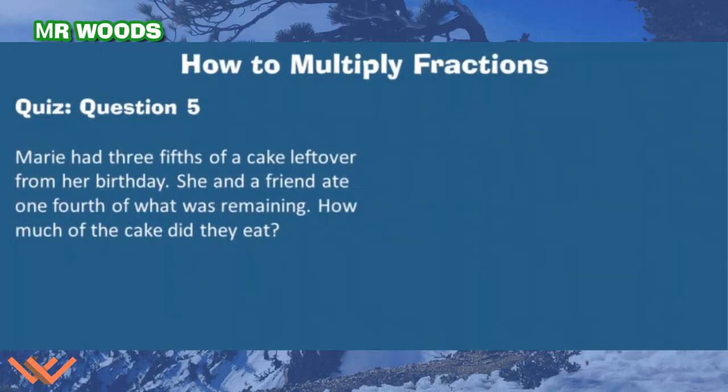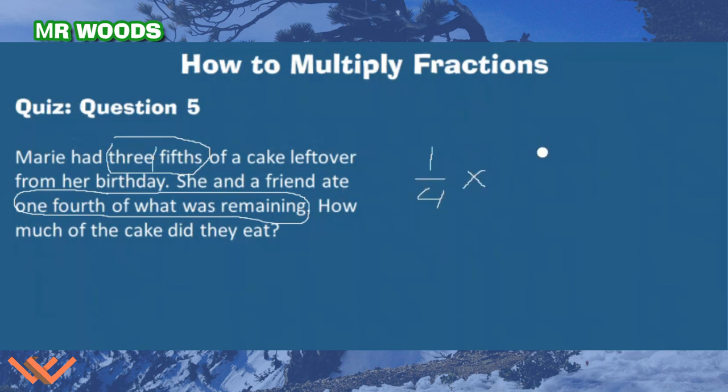Question number five. Marie had three fifths of a cake left over from her birthday. She and a friend ate one fourth of what was remaining. How much of the cake did they eat? We have to look at the important information. So I have three fifths of a cake. And she and a friend, they ate one fourth of what was remaining. Remember, that's key right there. It wasn't one fourth of the original cake. That's a totally different problem. One fourth of what was remaining. I'm going to be one fourth of remaining three fifths. That's what was remaining, what was left over. And that is equal to one times three is three. Four times five is twenty. Can't reduce that any further. It's going to be three twentieths.